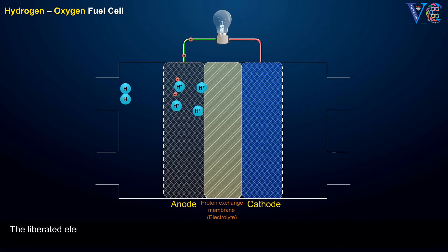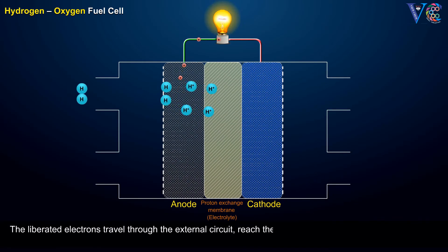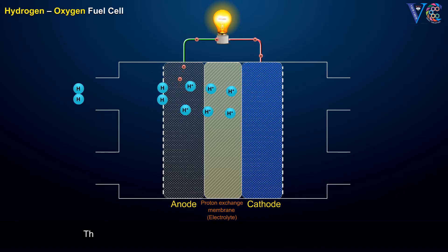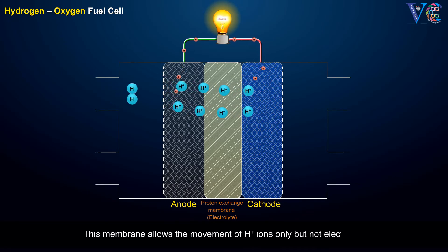The liberated electrons travel through the external circuit to reach the cathode, while the H+ ions travel towards the cathode through the proton-exchange membrane. This membrane allows the movement of H+ ions only, but not electrons.